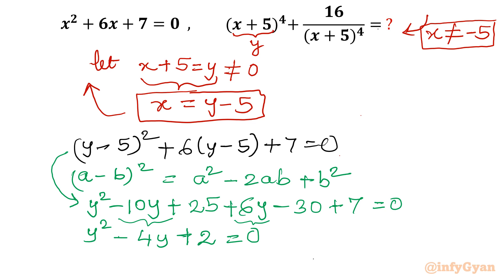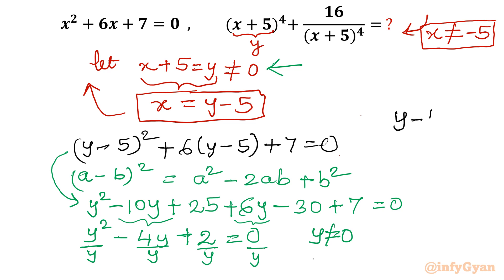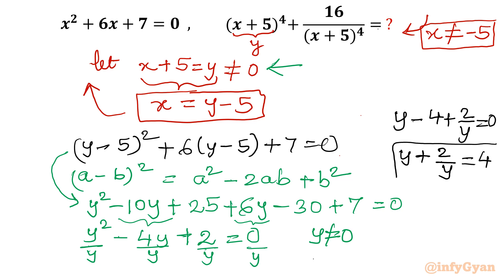Since y ≠ 0, we can divide both sides of the equation by y, giving y − 4 + 2/y = 0. Adding 4 to both sides yields y + 2/y = 4. This is the key equation in this context.